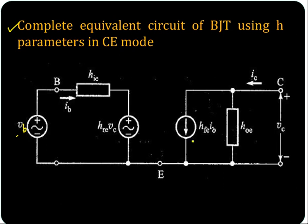And at the output side you have VC, IC, HOE, and HFE times IB. This is the complete equivalent circuit of BJT using H parameters.